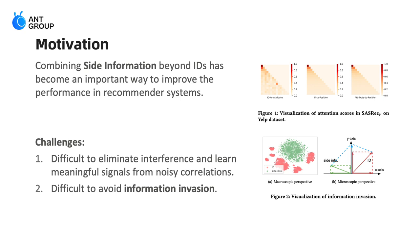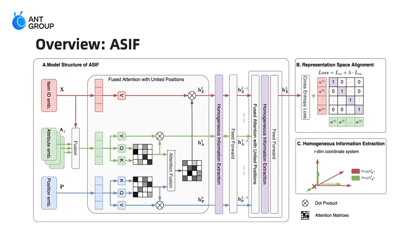From macro and microscopic perspectives, we suspect the invasion may be due to excessive distribution deviation and vector offset, respectively. To address the challenges above, we propose a method called Aligned Side Information Fusion.